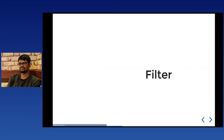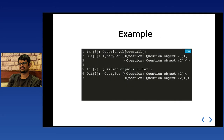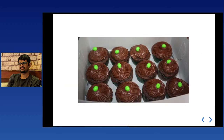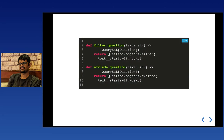`Question.objects.all()` returns a `QuerySet[Question]`. Similarly, `Question.objects.filter()` returns a `QuerySet[Question]`. A QuerySet is always either empty or contains model instances of the same type — it's a generic container type. You use square brackets to specify the inner type: `QuerySet[Question]`, where `QuerySet` is the outer type and `Question` is the inner type. Other methods like `values()`, `all()`, `exclude()` also return QuerySets.